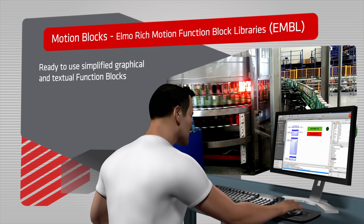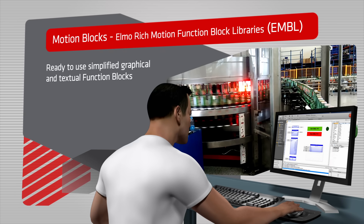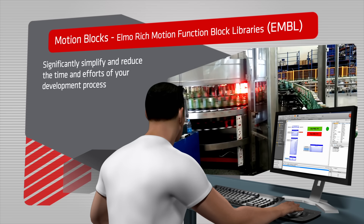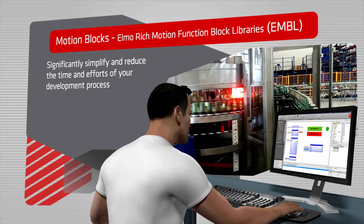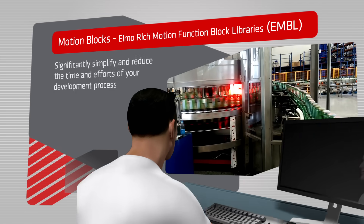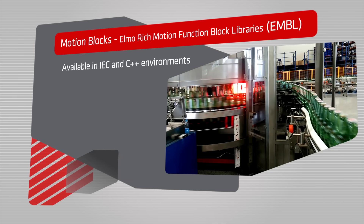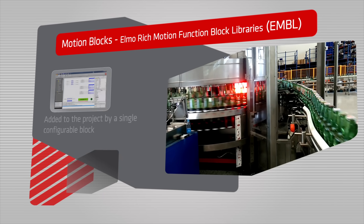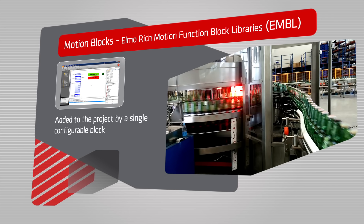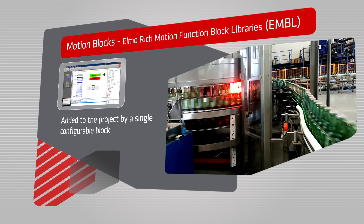Incorporated within the installation of the new EASE-2 are the EMBLs — ELMO's rich motion function block libraries — providing ready-to-use graphically and textually simplified function blocks with inputs and outputs that perform complex motion activities. All motion activities such as DS-402 homing, e-cam, emulation, output compare, etc., can be programmed and added to the application project using a single configurable set of grouped function blocks.